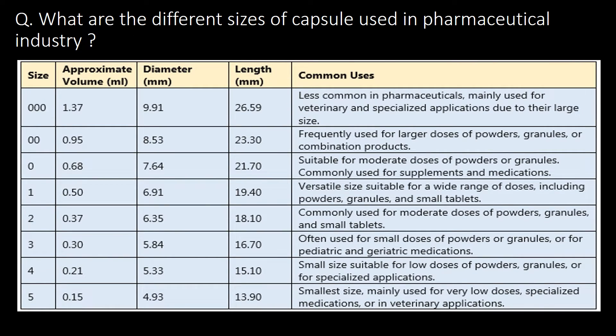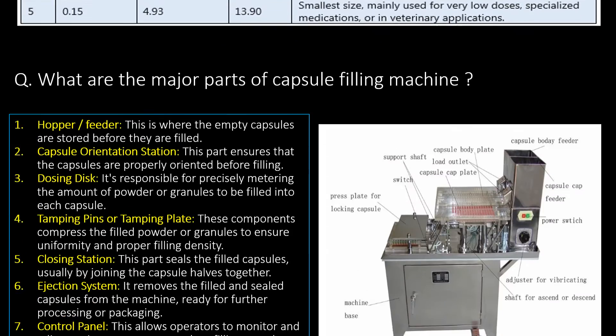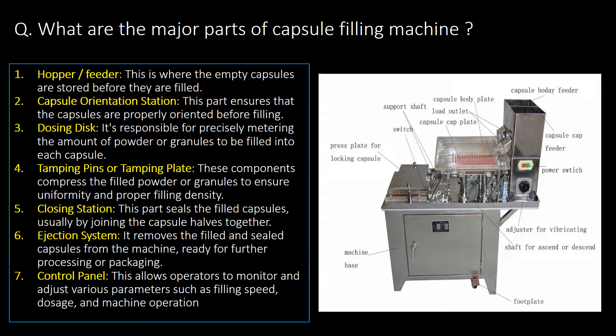Welcome. We will start with some basic questions and then go in detail. First question: what are the different sizes of capsule used in the pharmaceutical industry? You can refer to the below table for eight different sizes, approximate volume that can be filled, diameter, length, and common uses. The eight different sizes commonly used in pharma industry are triple zero (000), double zero (00), zero, one, two, three, four, and five.